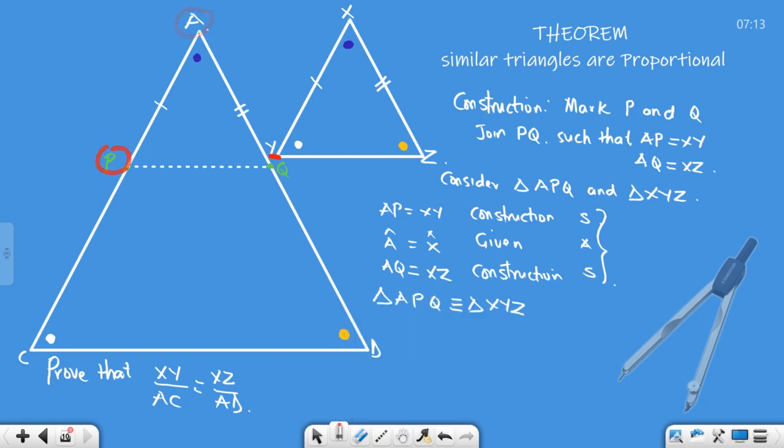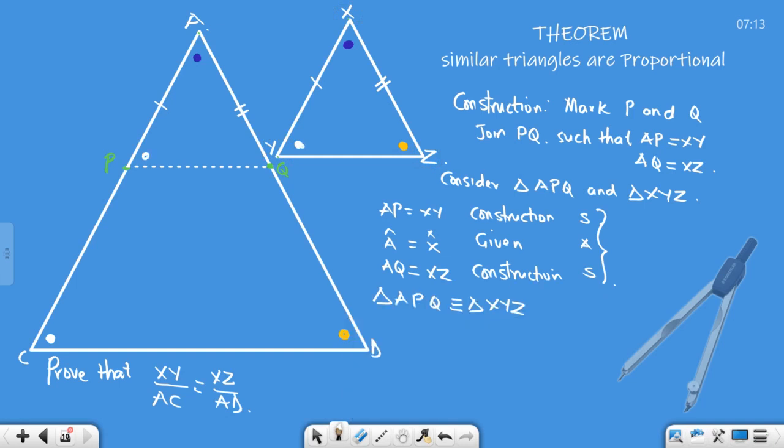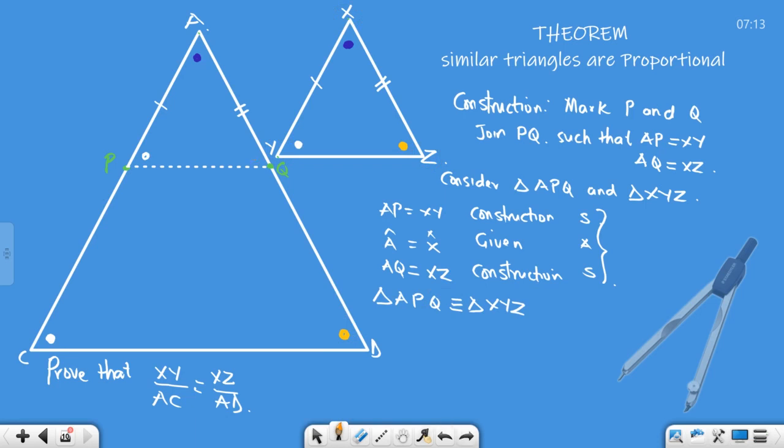That's very important. The order is very important. We have proven that APQ is congruent to XYZ. Therefore, what we've done is we have transposed this angle—this angle is now here. Because we are saying these triangles are exactly the same, we can then say that angle P is therefore equal to angle C.